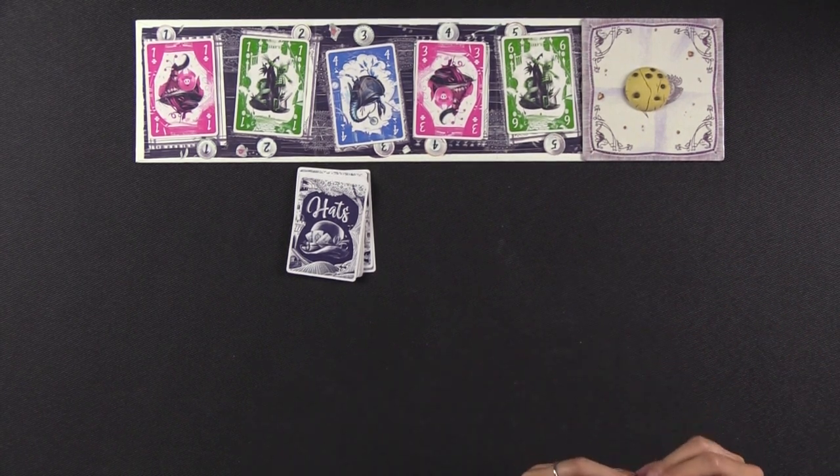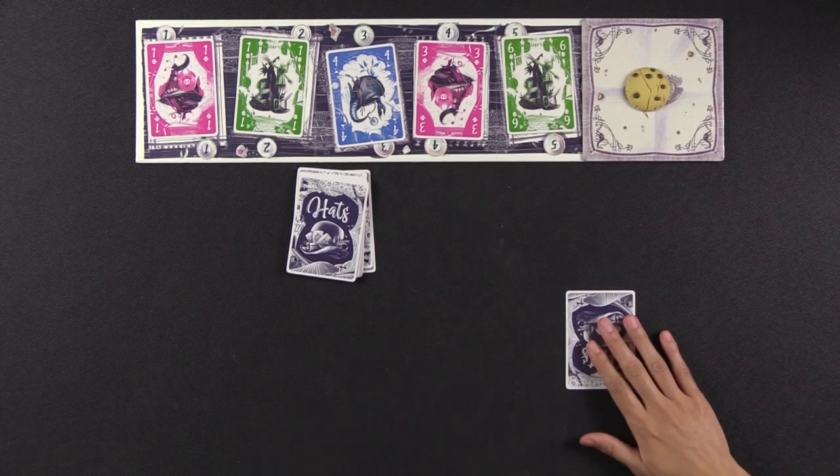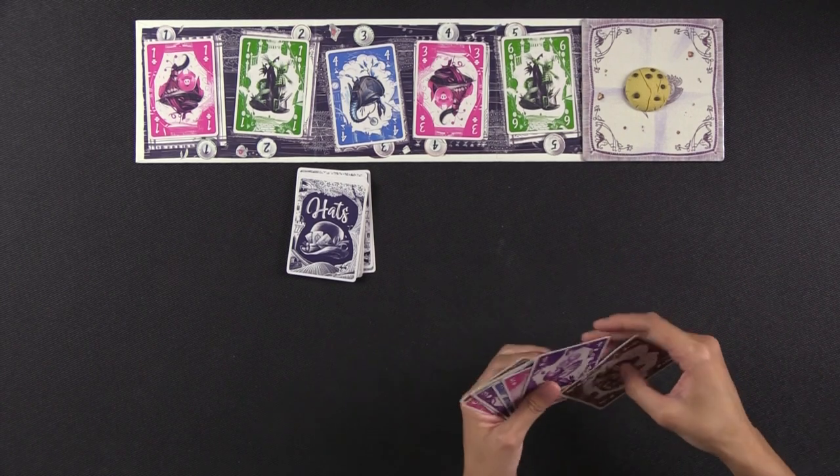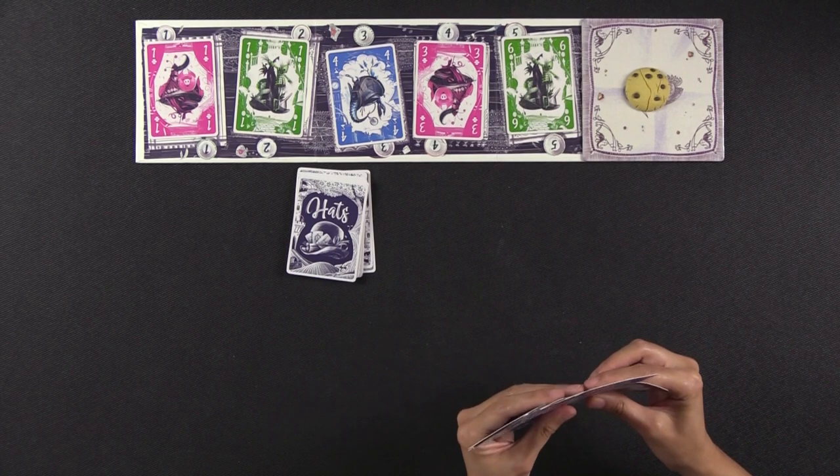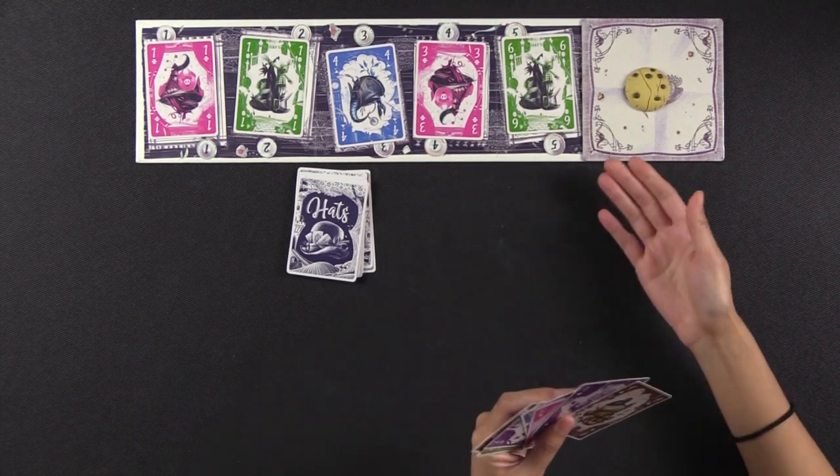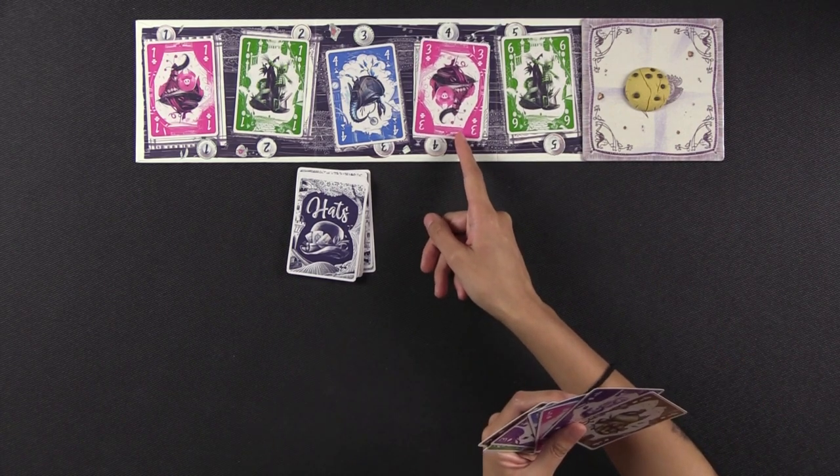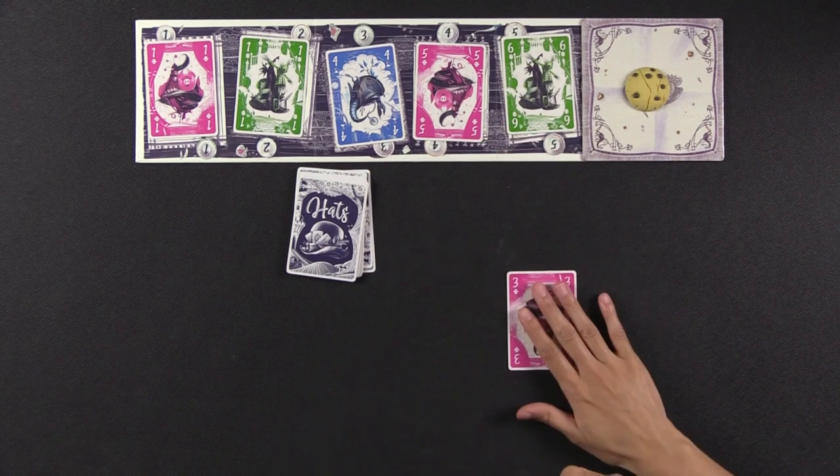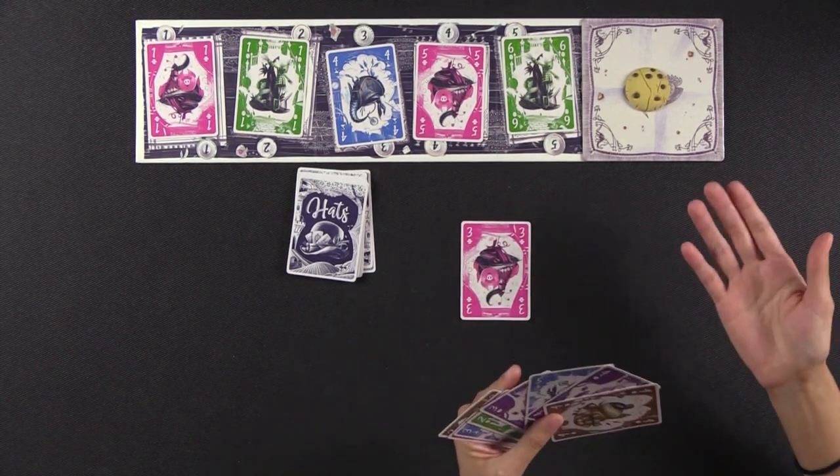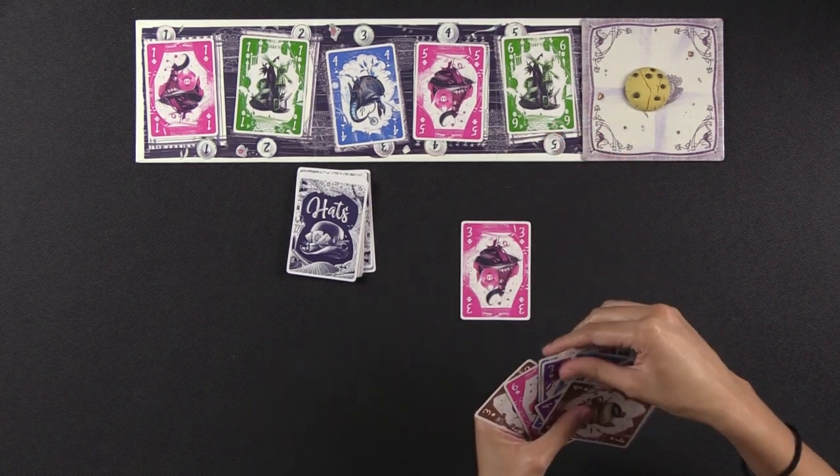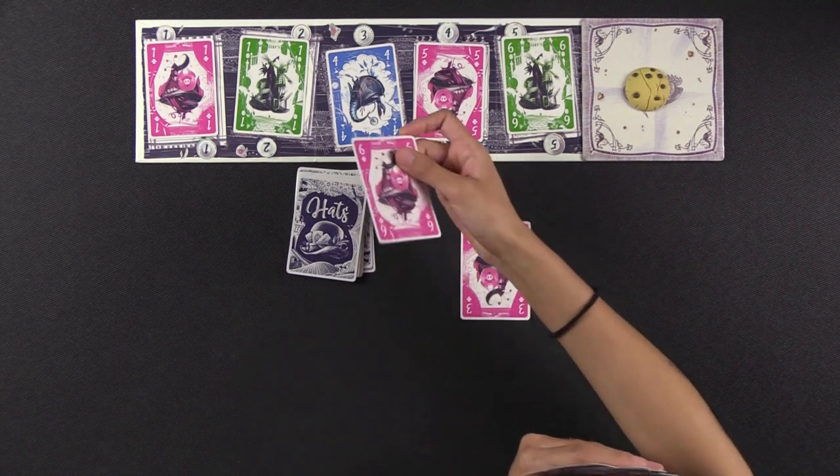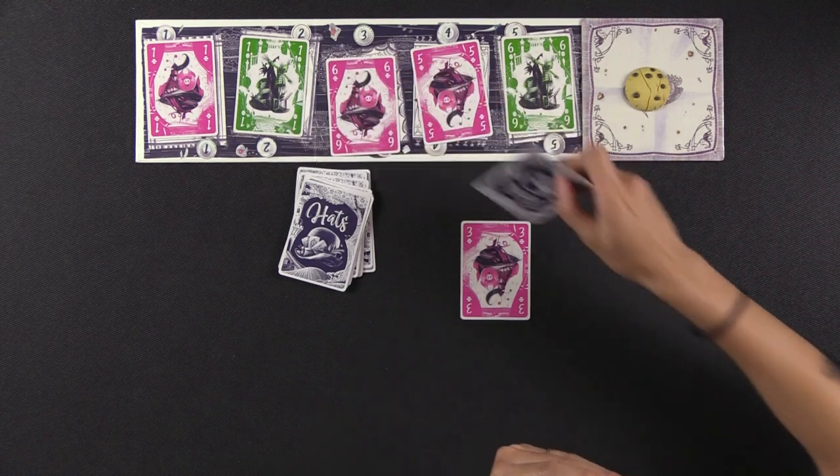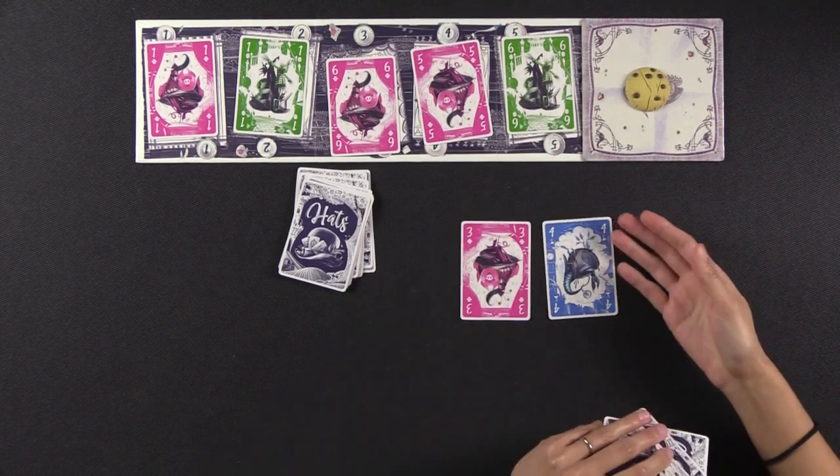And so the way that we do this is on your turn, you are going to do one of two things. You are going to either exchange a card from your hand with the table, or you're just going to play a card face down as a black hat. So a majority of the time, you're going to be doing the first option. In order to exchange a card from your hand with one from the table, the card exchange has to either be the same color. So if I wanted to exchange for this pink three, I would have to choose another pink card. The other option is you can exchange a card from your hand of a different color, if the card that you're exchanging with is a higher number than the card that's on the table.